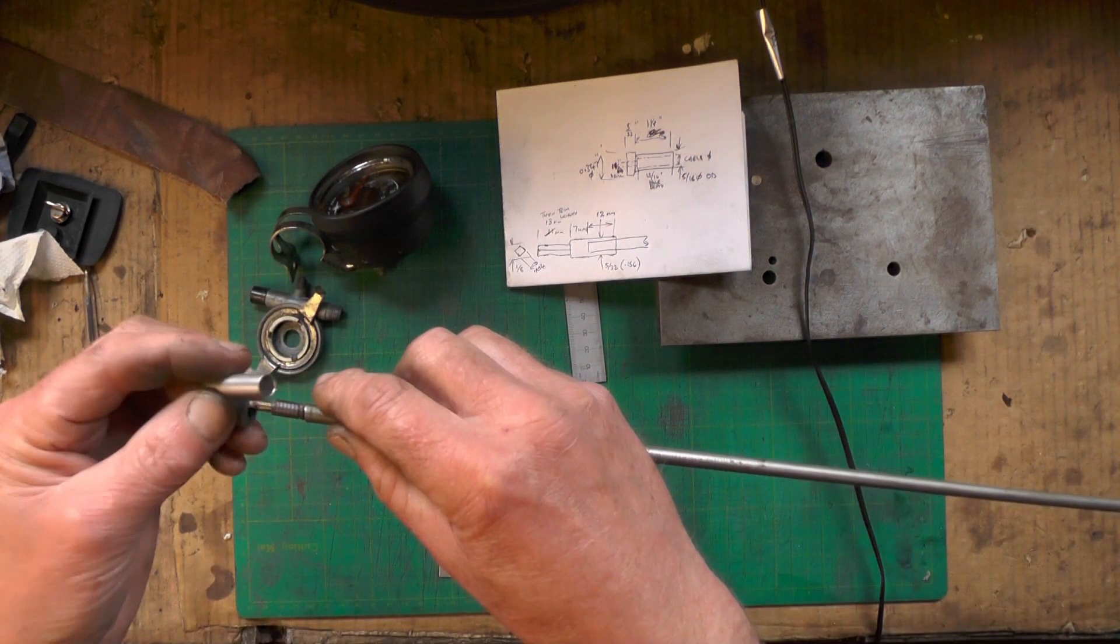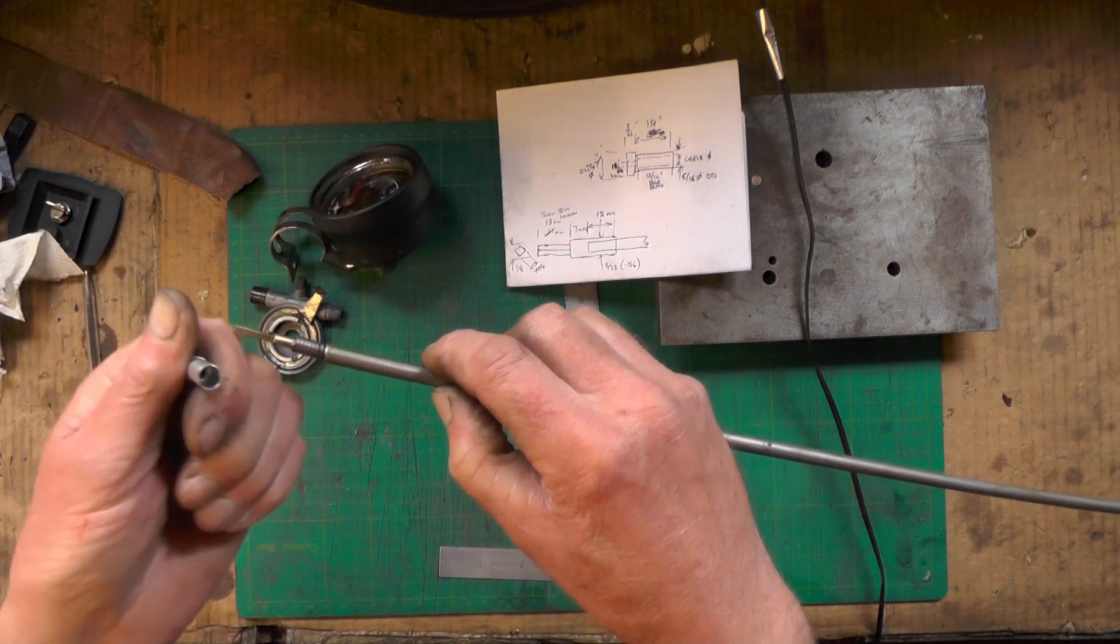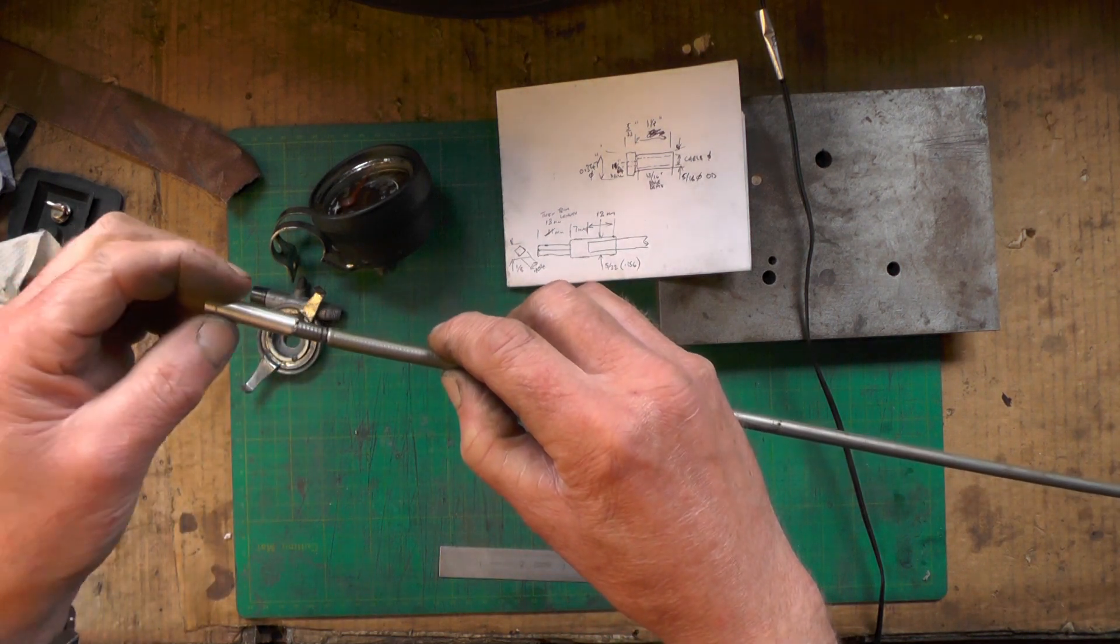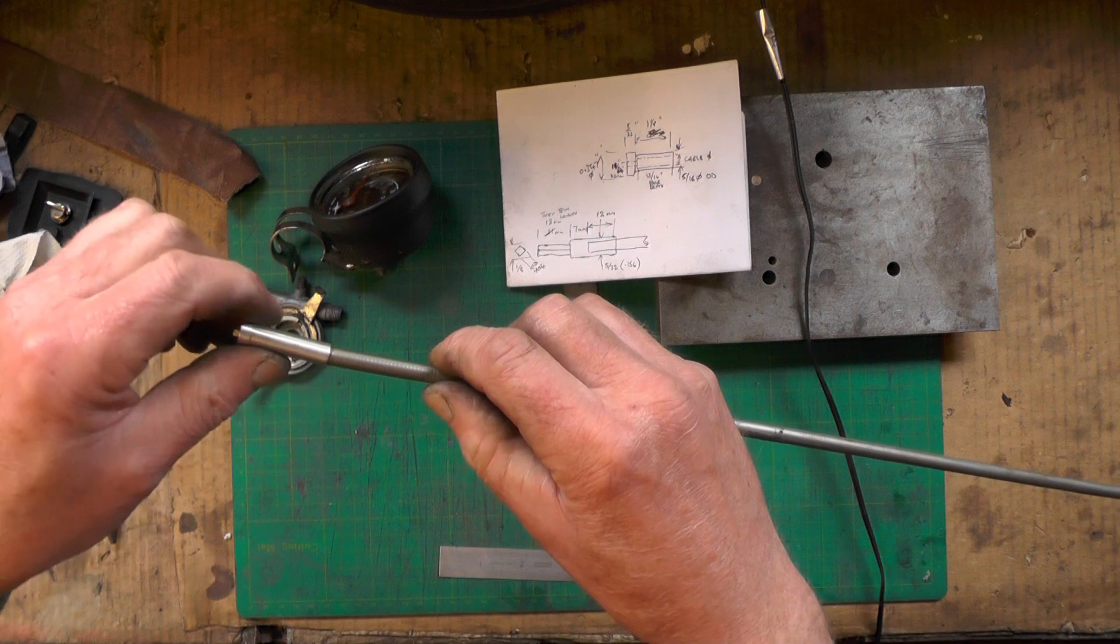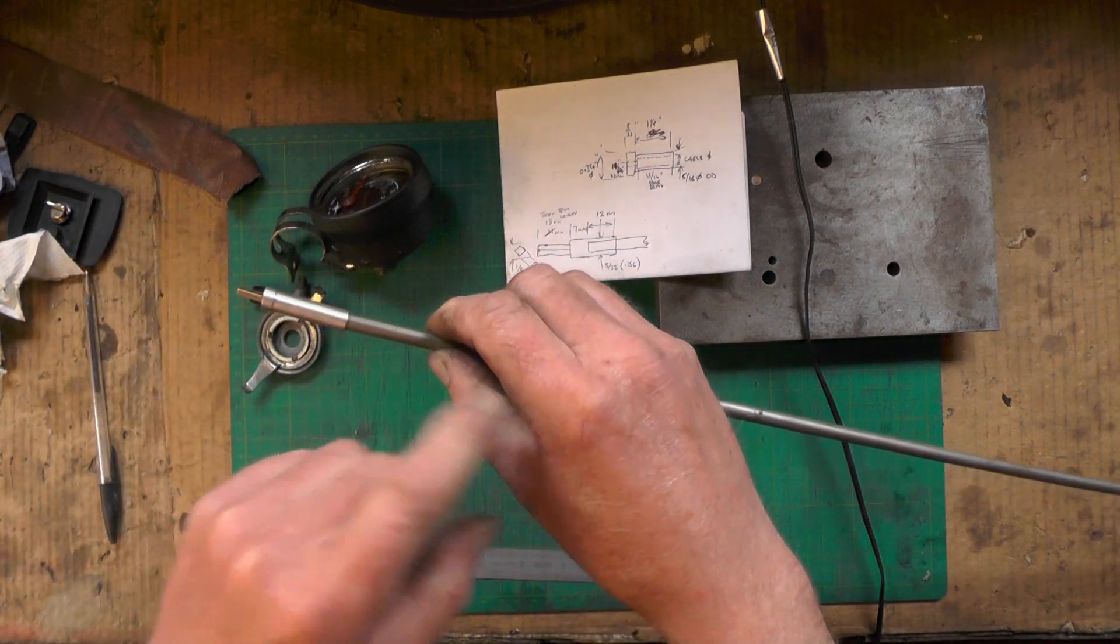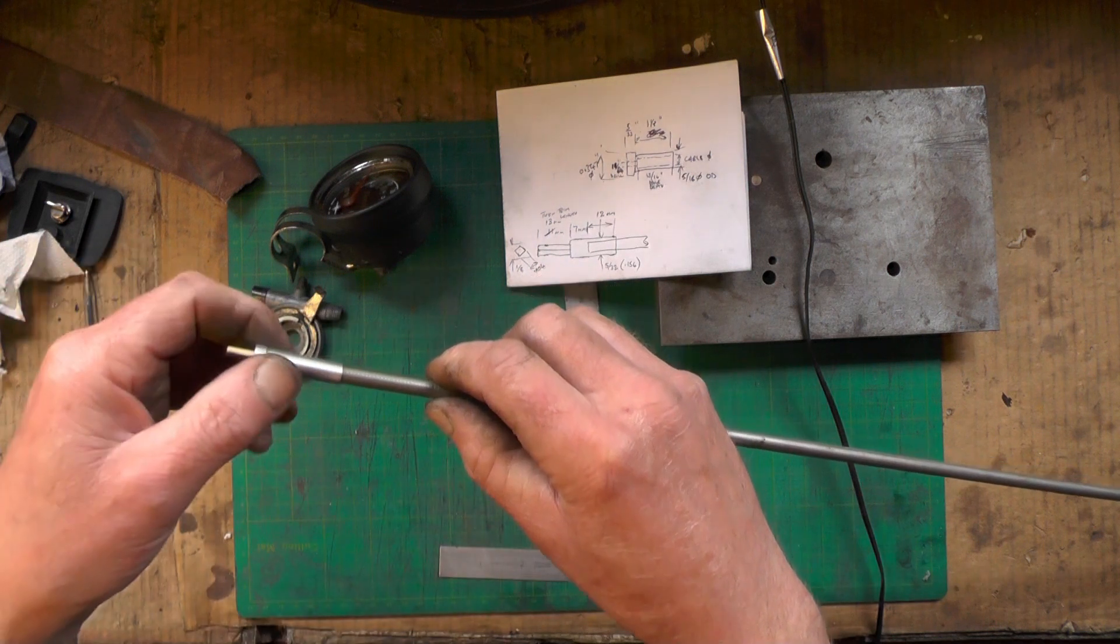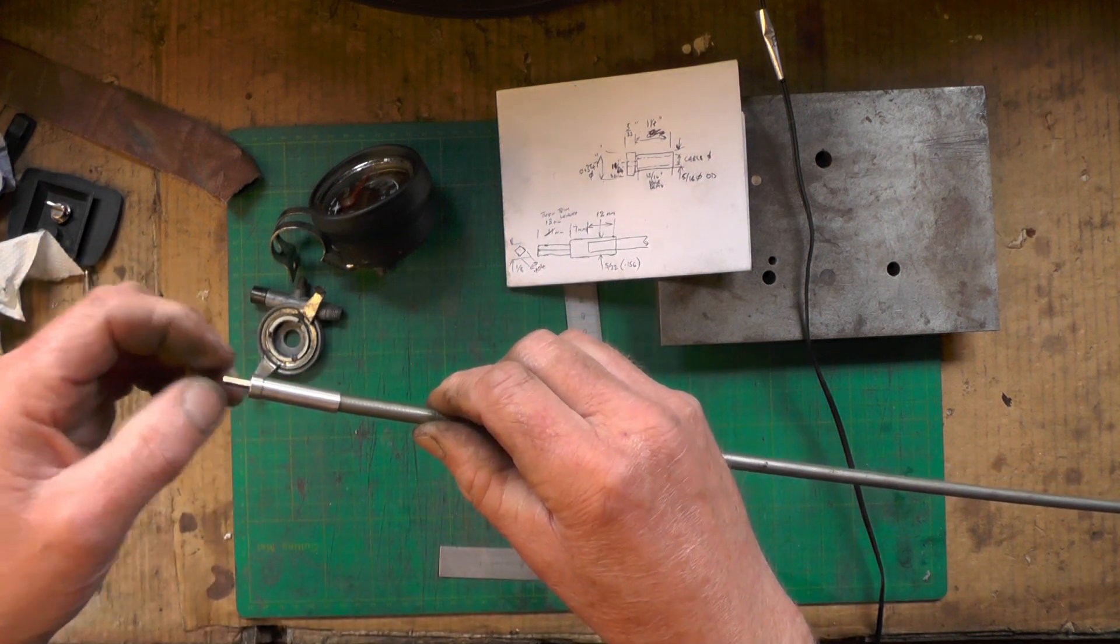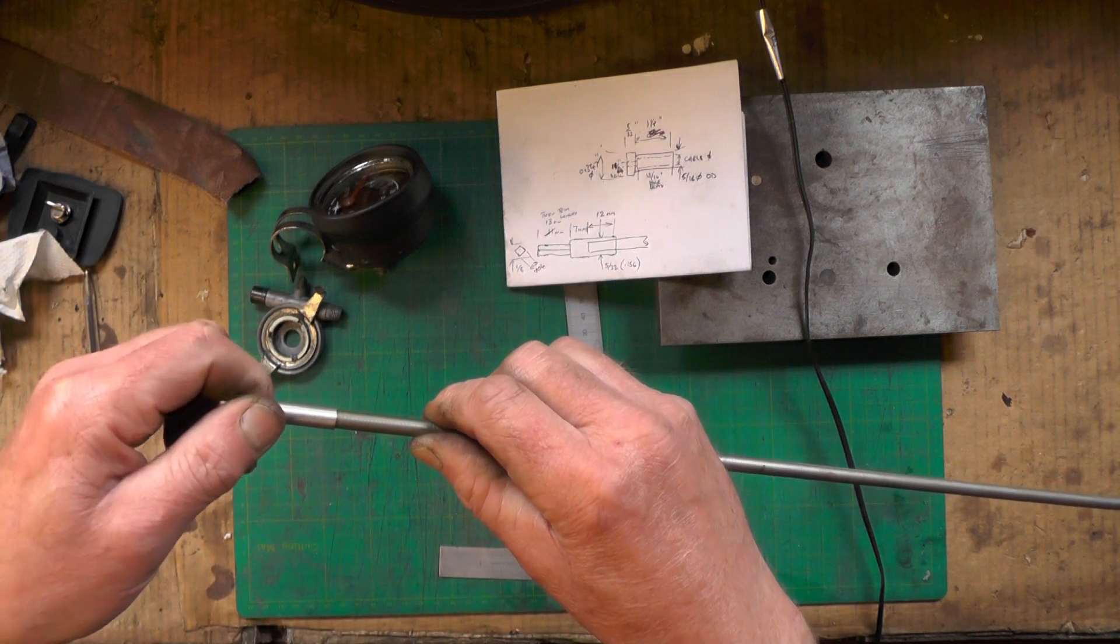Put your nut on first. Then I will eventually glue this ferrule on. Once I know everything fits OK. And also I will grease the inner cable thoroughly before I finish off.